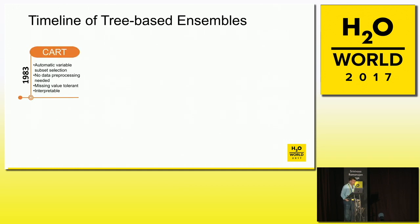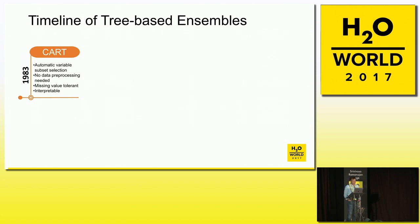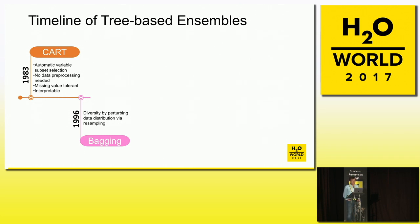Rule ensembles — or the lineage of rule ensembles — started with CART. Decision trees were very popular because they were highly interpretable. Some of the key characteristics: they do automatic variable selection, much like GBM or Random Forest do; there wasn't a need to do a lot of data pre-processing the way you have to be careful about in linear models; they could handle missing values very elegantly; and they were highly interpretable. Unfortunately, they were not very accurate.